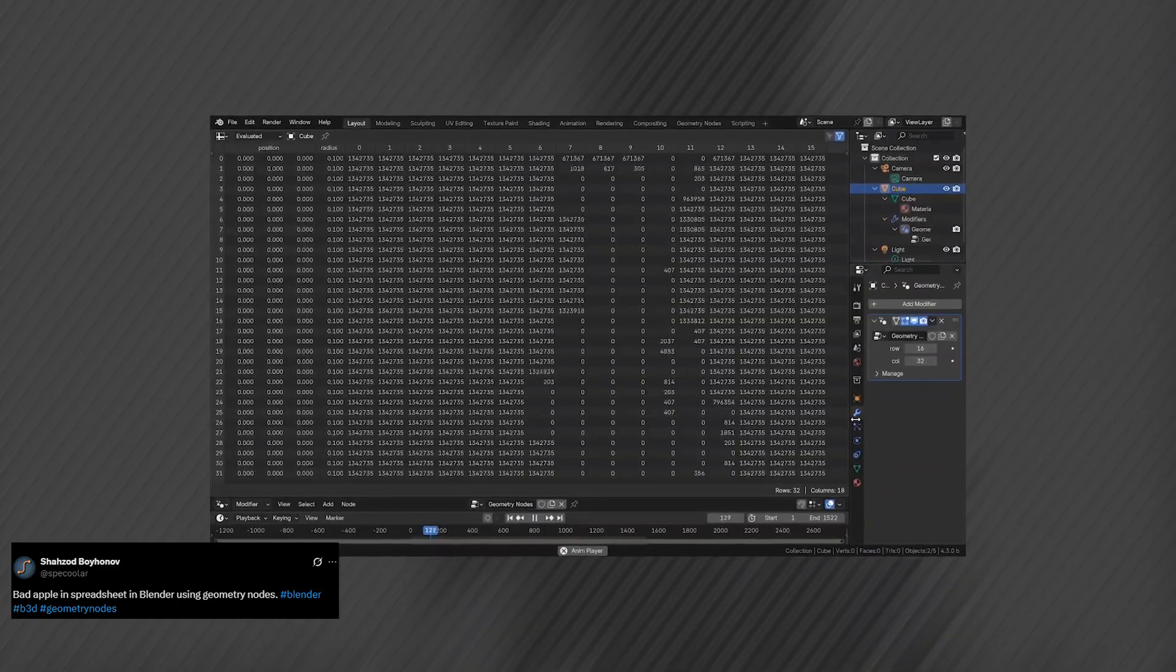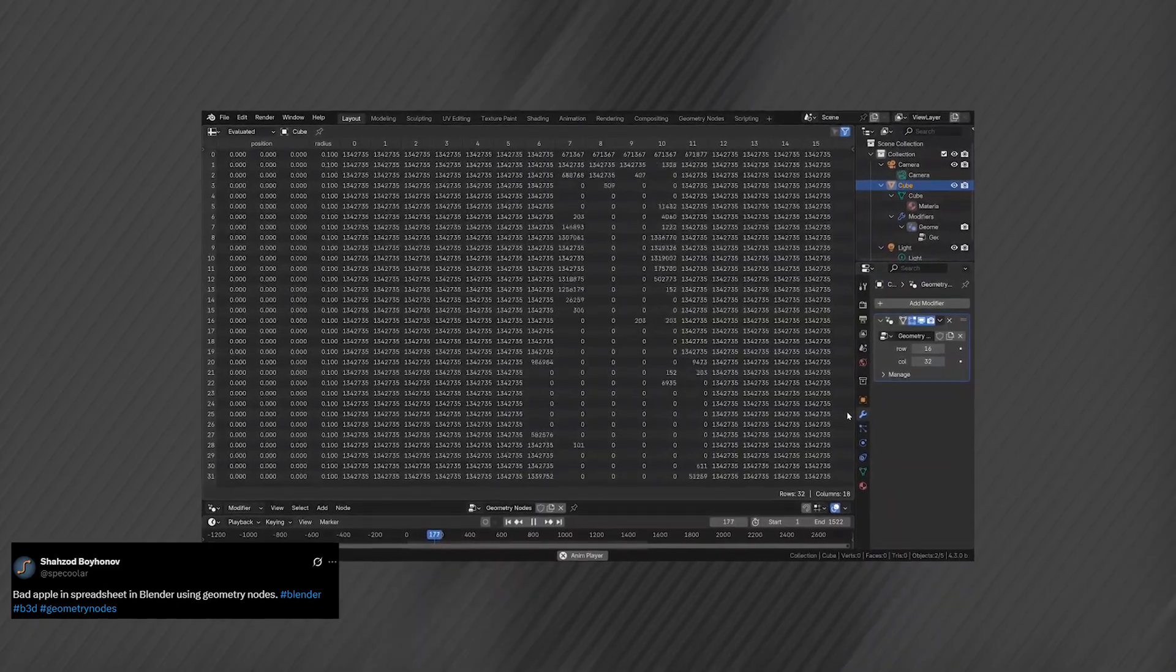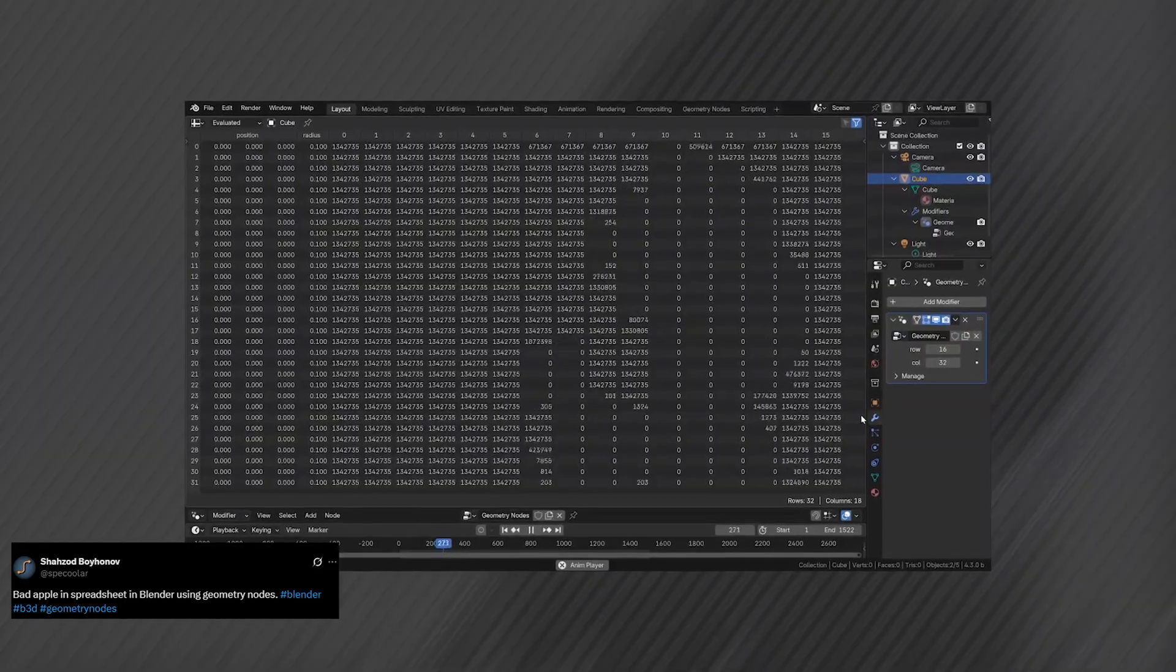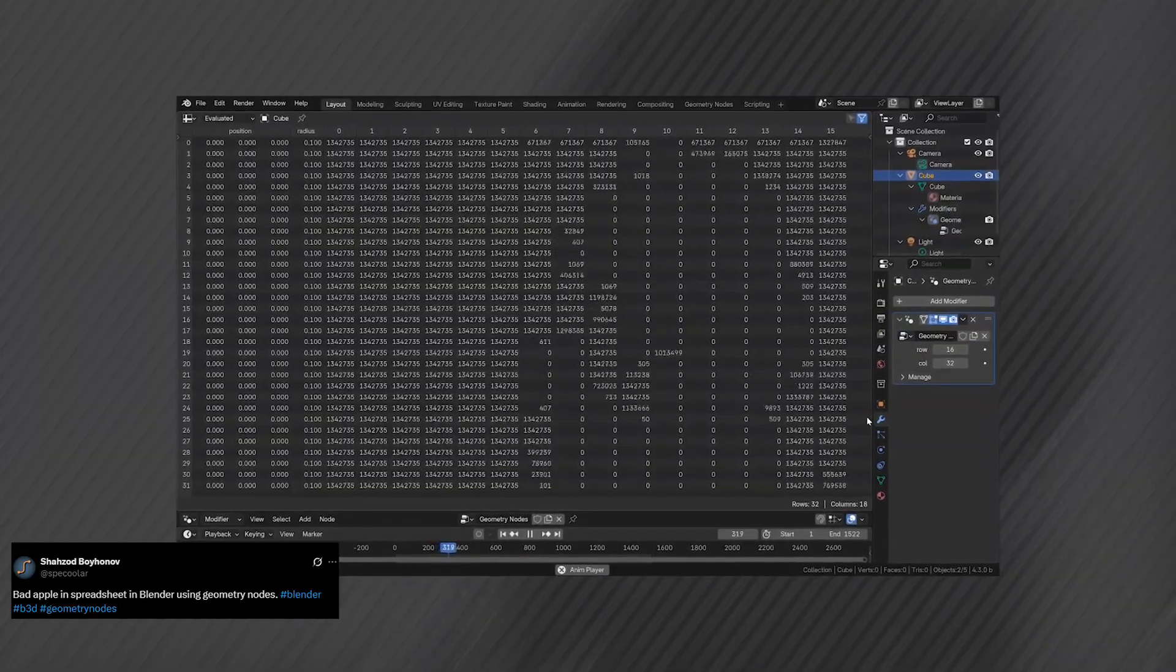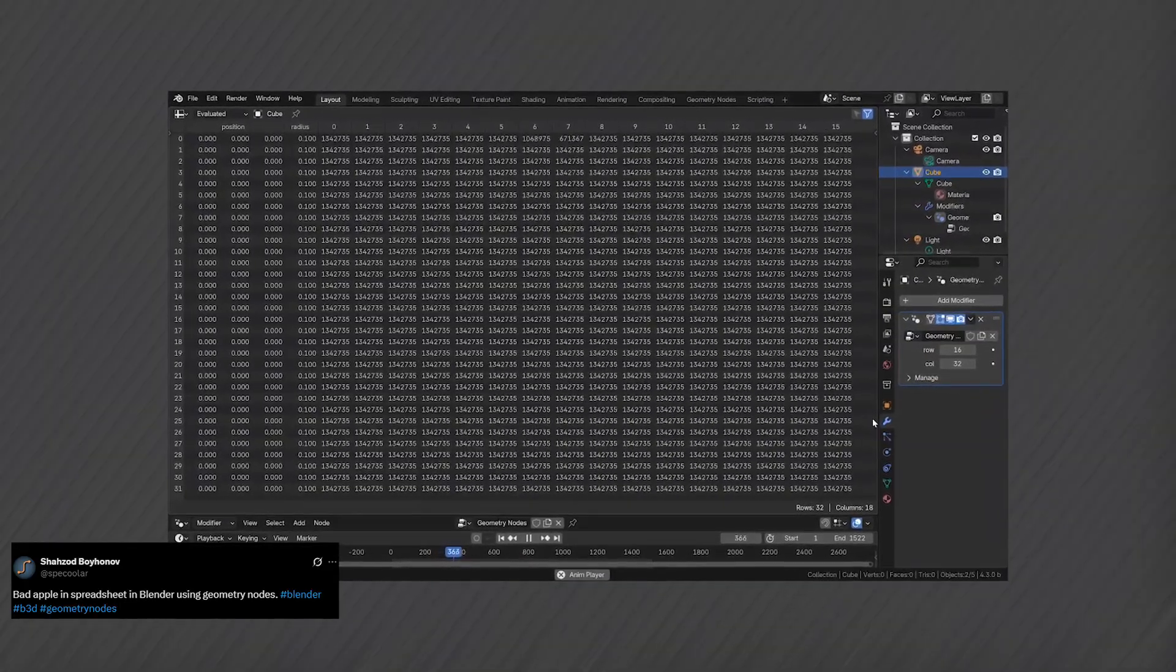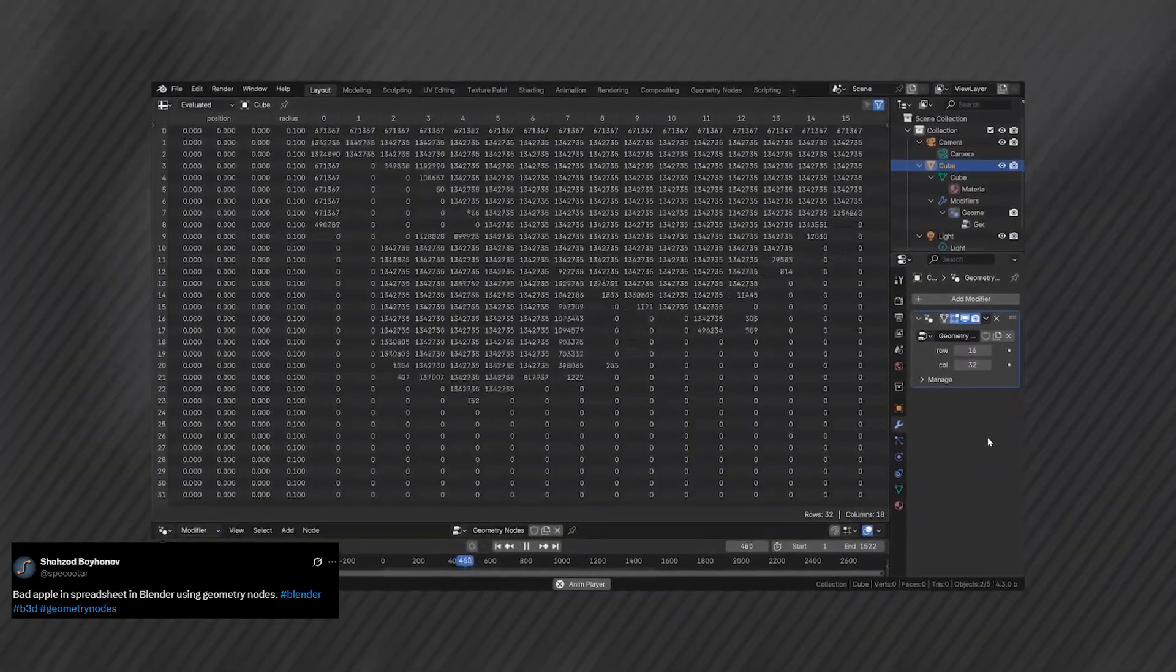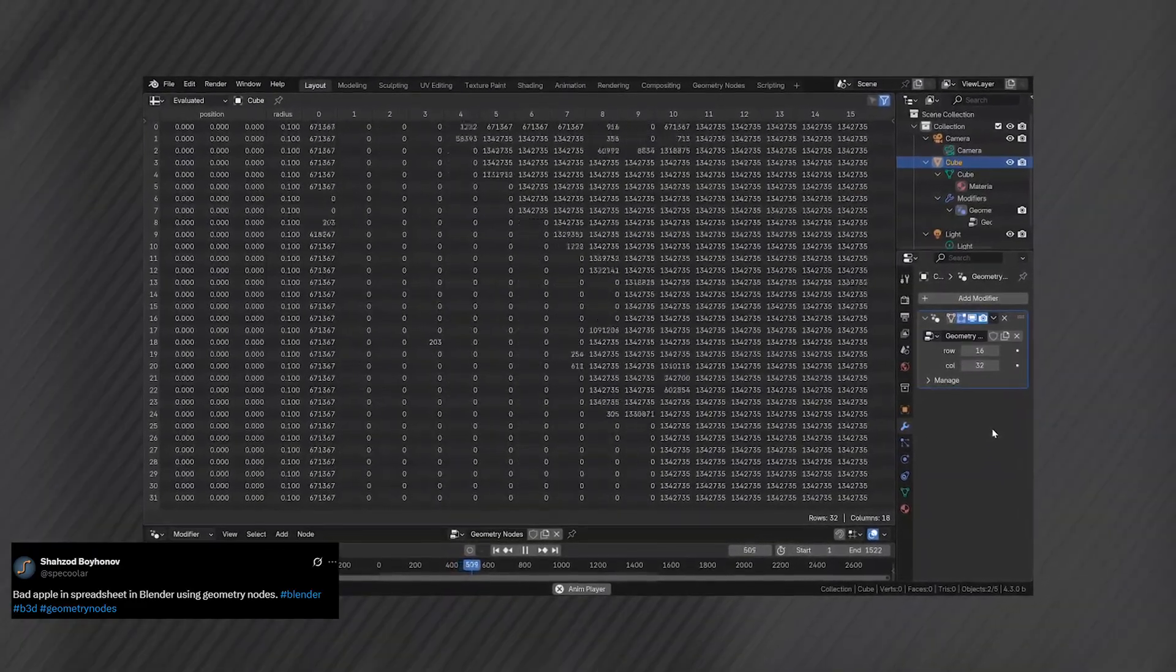It perfectly sums up what Geo Nodes really is. You build everything through a node interface and the spreadsheet is the raw data underneath. You can even flip the whole idea and literally render animations inside the spreadsheet using geometry nodes. I swear some of these demos motivate me and others just make me sit there like bro how is this even possible?